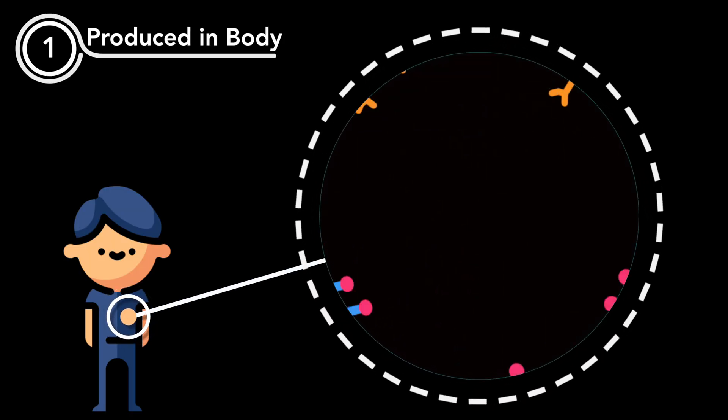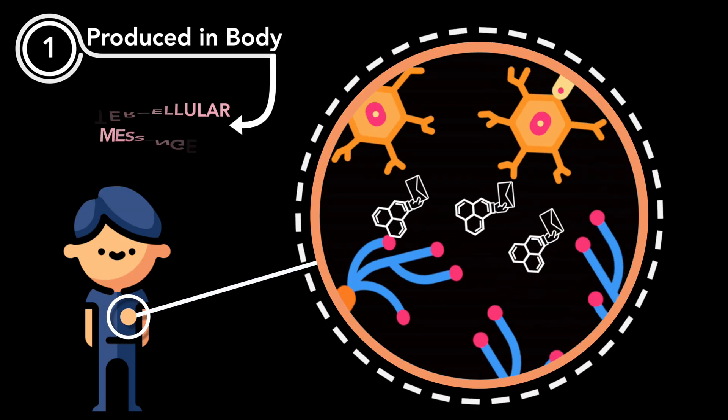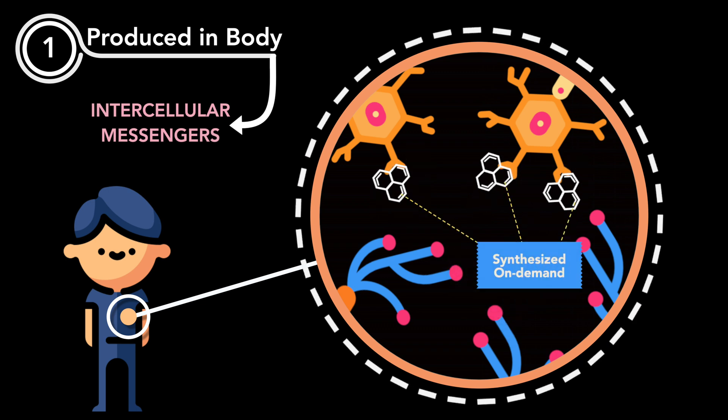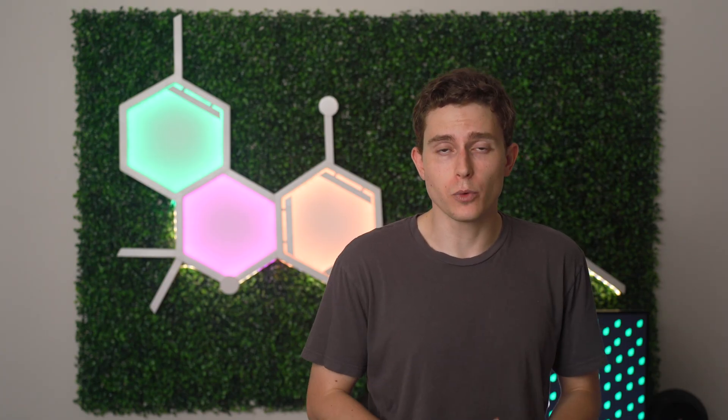Now endocannabinoids, endo meaning inside, are cannabinoids produced within the body and serve as intercellular messengers. Scientists believe that these cannabinoids are synthesized on demand rather than stored for later use, which may be why the endocannabinoid system is linked to the regulation of so many functions within the body.